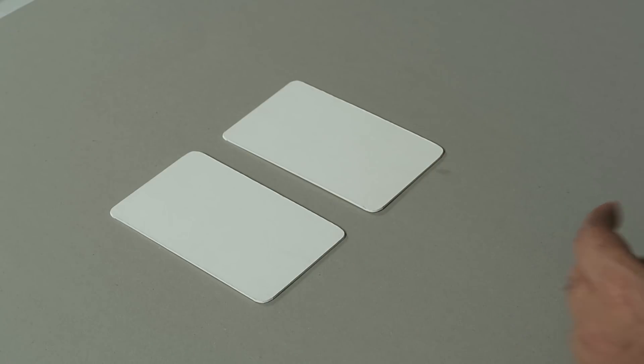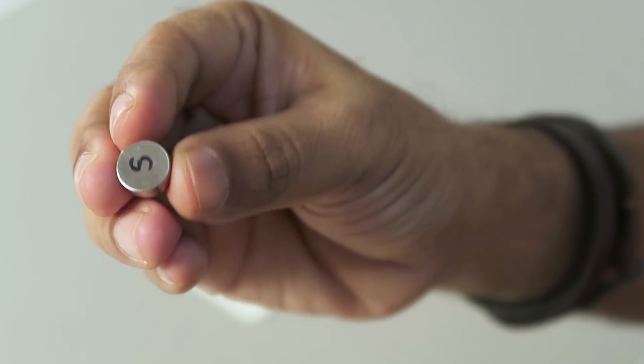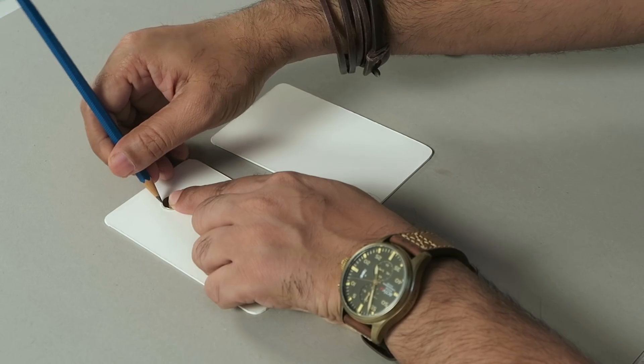Now we will take some markings here for the magnets. So I have some magnets here. These are button magnets. So I'll just take one and we'll place it and take a marking.